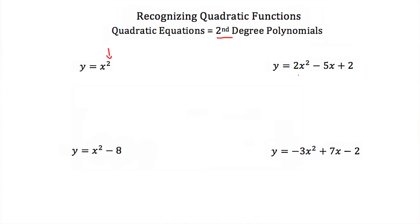Here we have y is equal to 2x squared minus 5x plus 2. Again, 2 is our highest exponent, so this is a second-degree polynomial. We have y is equal to x squared minus 8, a second-degree polynomial. y is equal to negative 3x squared plus 7x minus 2. Our highest exponent is 2, so this is a quadratic equation or a second-degree polynomial.